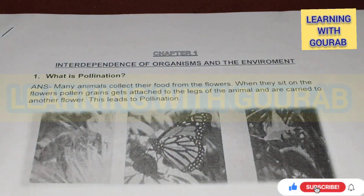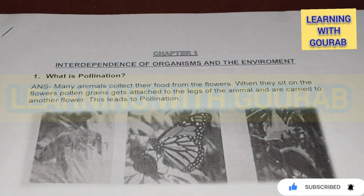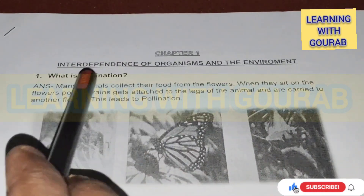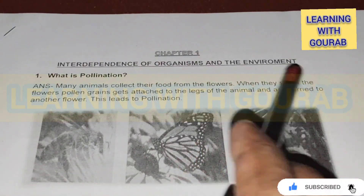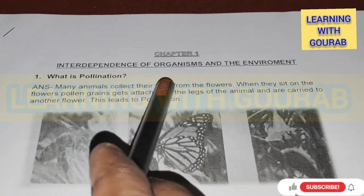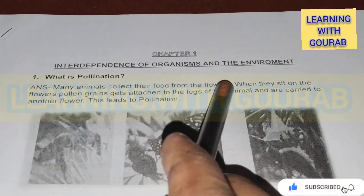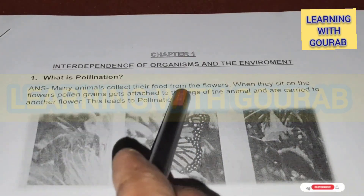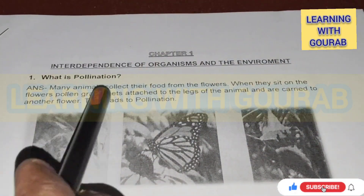Chapter 1: Interdependence of Organisms and Environment. First question: What is pollination? Answer: Many animals collect their food from flowers. When they sit on the flowers, pollen grains get attached to the legs of the animals and are carried to another flower. When they sit on a new flower, the pollen is transferred. This leads to pollination.